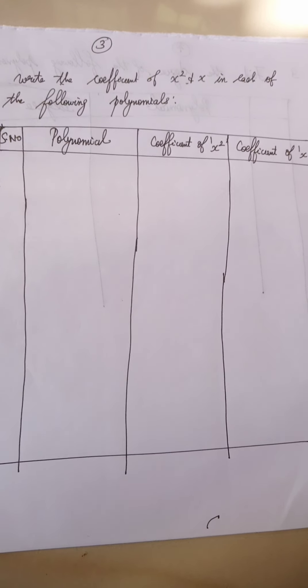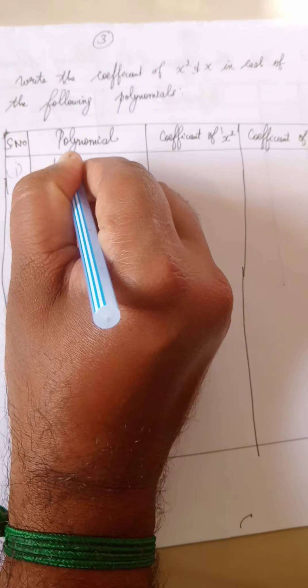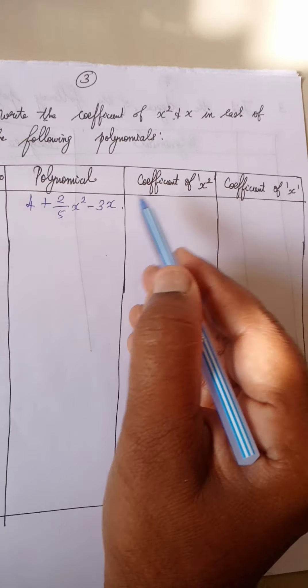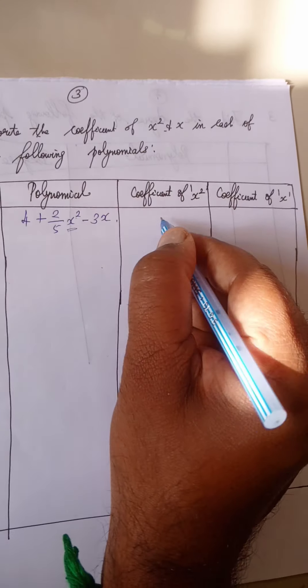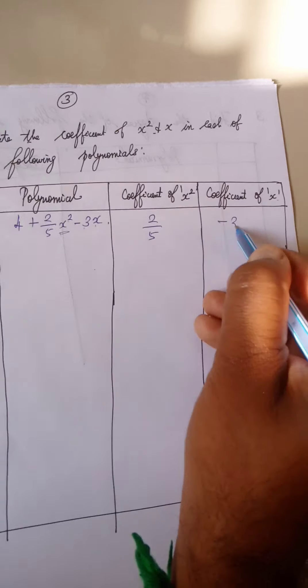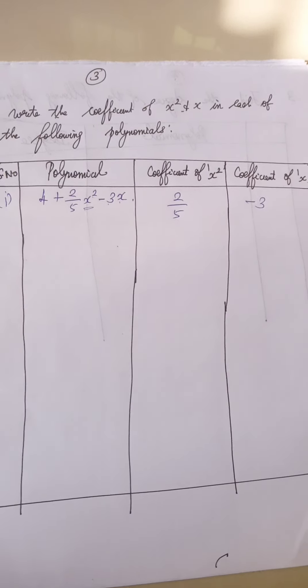Next question: write the coefficient of x square and x in each of the following polynomials. First one: 4 plus 2 by 5 x square minus 3x. Coefficient of x square is 2 by 5. Coefficient of x is minus 3. We need to check whether plus or minus is written carefully in mathematical expressions.